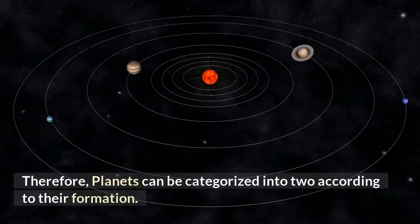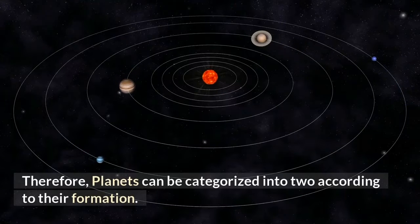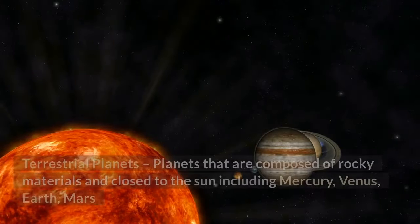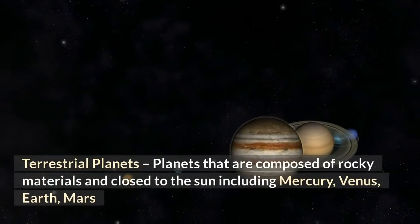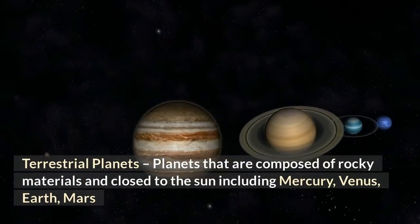Therefore, planets can be categorized into two according to their formation. Terrestrial planets: planets that are composed of rocky materials and close to the sun including Mercury, Venus, Earth, and Mars.